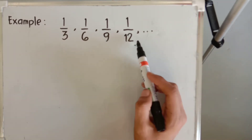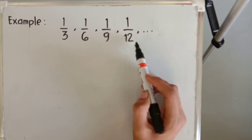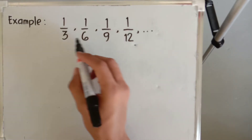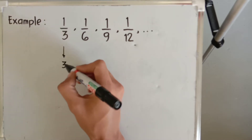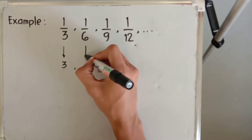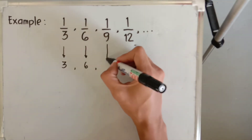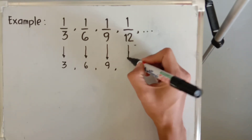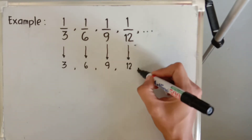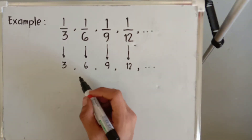Again, the very first thing to do in order to check whether it is harmonic or not, we have to reciprocate all the terms. So one-third becomes three, one-sixth becomes six, one over nine becomes nine, one over twelve becomes twelve, and so on.